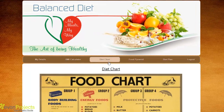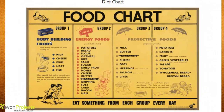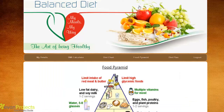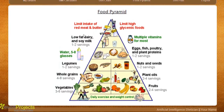Let's check the diet chart added by the admin, which shows various food groups and specifies what food should be eaten for specific body types. Here we can see bodybuilding foods such as milk, cheese, egg, meat, and fish. There is also a section for energy foods and protective foods, and it says to eat something from each group every day. The food pyramid module shows what should be eaten and what should be minimized in intake, so users can follow these diet plans to keep their body healthy.